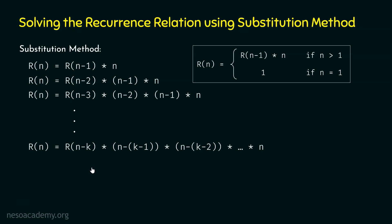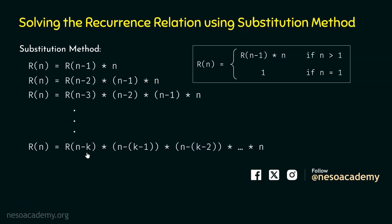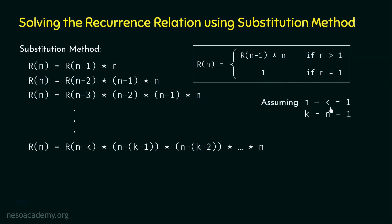What was the base case? If n is equal to 1, then return 1. From the recurrence relation also, it is clear that R(n) = 1 if n = 1. As I am assuming that fact of n minus k is the last recursive call, n minus k must be equal to 1 — then only the base case will be satisfied. Therefore, n minus k must be equal to 1 in order to satisfy the base case. Hence, we assume n minus k equals 1, and from this we obtain k = n minus 1. Now, we can replace k by n minus 1 in this expression.